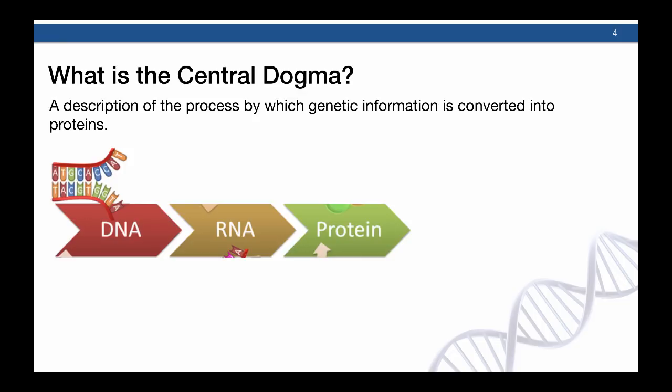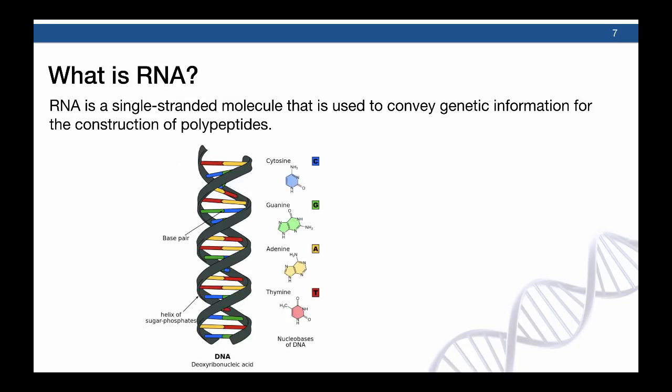The processes by which these changes occur are known as transcription, from DNA to RNA, and translation, from RNA to protein. The first step in this process is to go from DNA to RNA through the process of transcription.